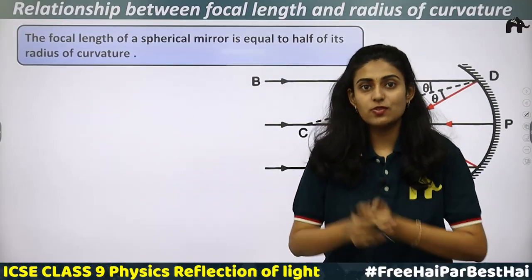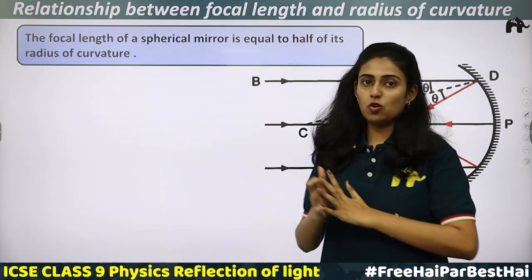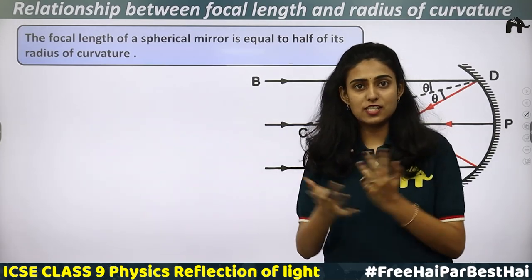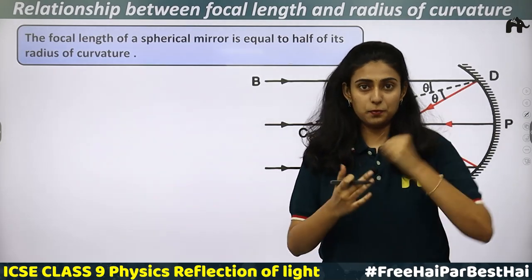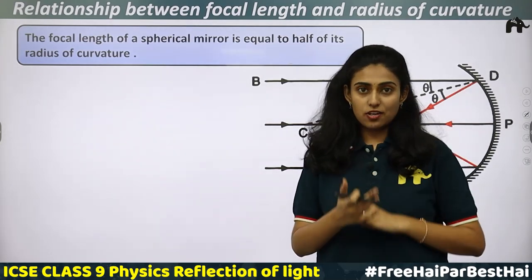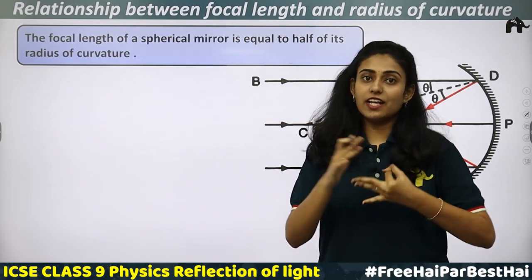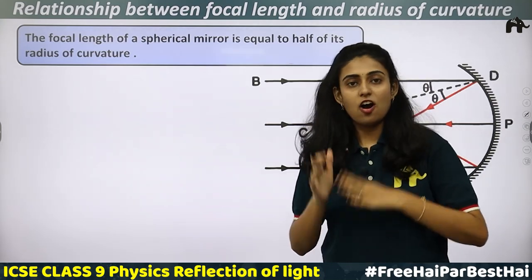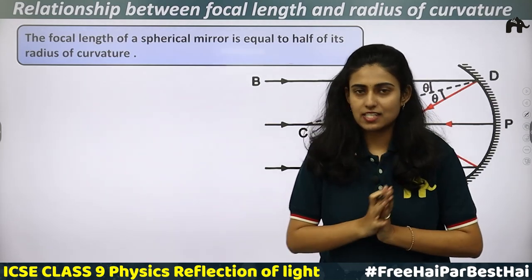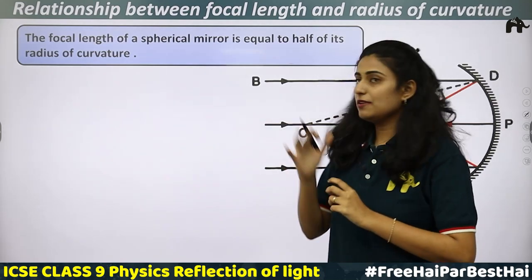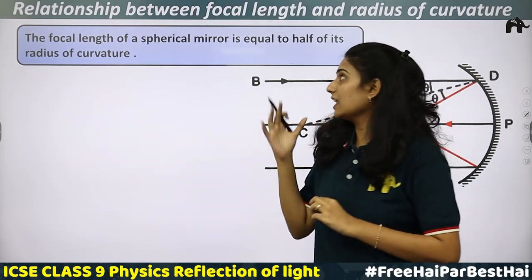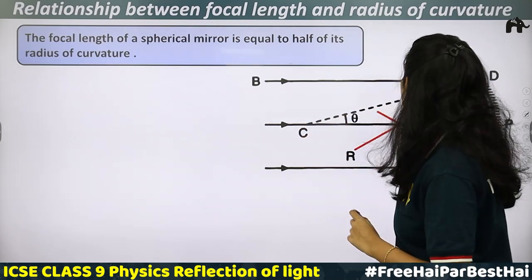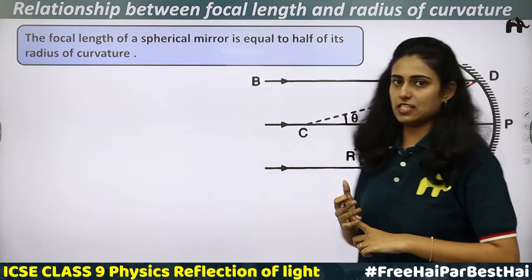In our previous sections, we have understood the different terms used in case of a spherical mirror: pole, center of curvature, radius of curvature, focal length. Today we will first find the relationship between the focal length and radius of curvature.